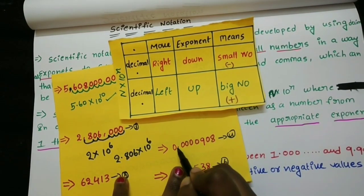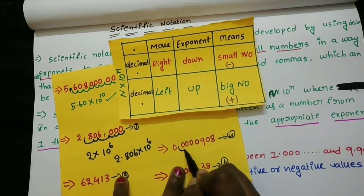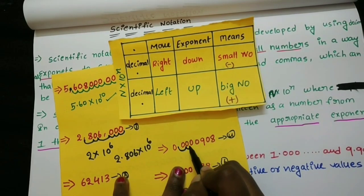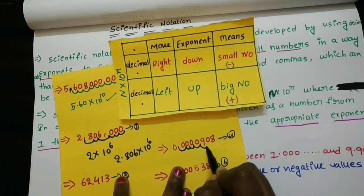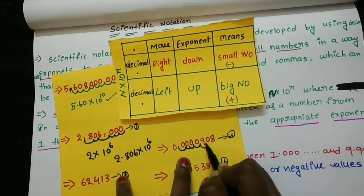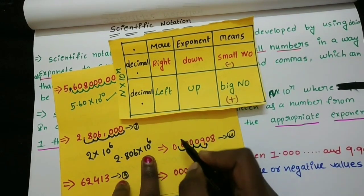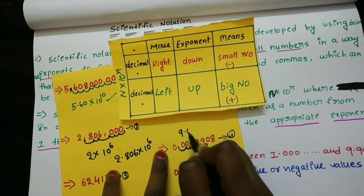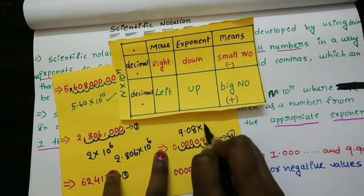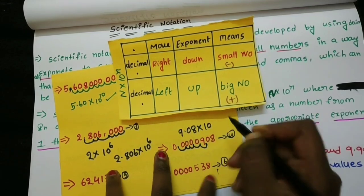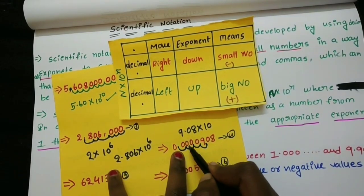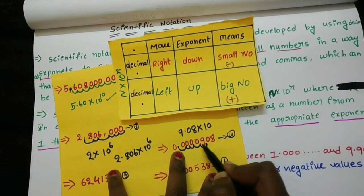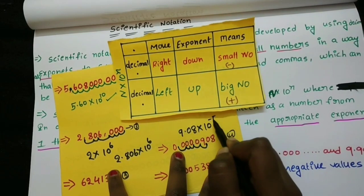Example 4: counting 1, 2, 3, 4, 5 places. The answer is 9.08 into 10 to the power of minus 5. Moving the decimal to the right gives a negative exponent.